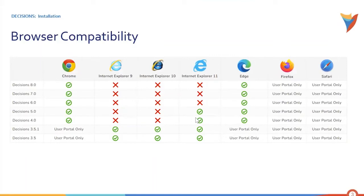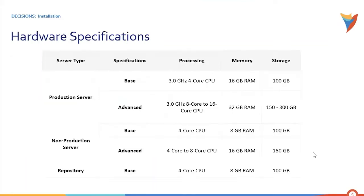Now let's move into hardware specifications. Based upon the server type you are installing, you need the required specifications. For example, the production server base requires a 3 GHz, 4-core CPU and 16 GB RAM, while the advanced configuration requires 8-core CPU and 32 GB RAM. The non-production server has its own hardware specifications, and the repository server requires only a 4-core CPU, 8 GB RAM, and 100 GB storage.